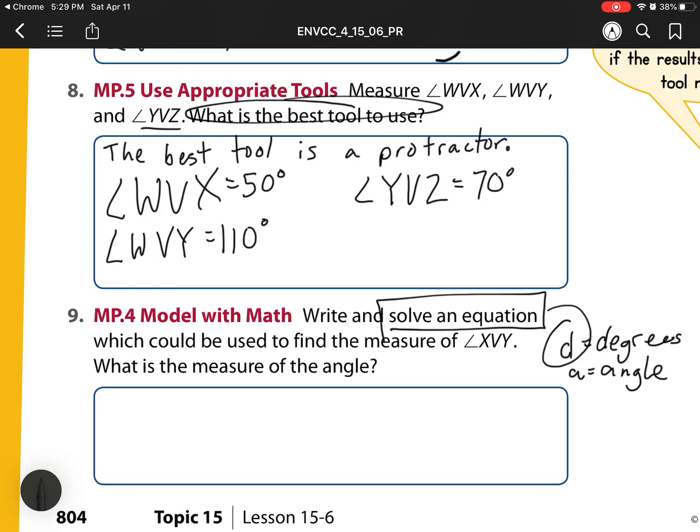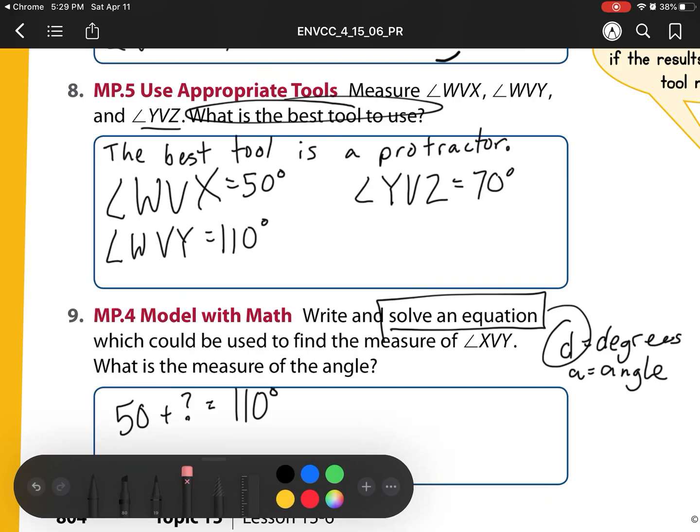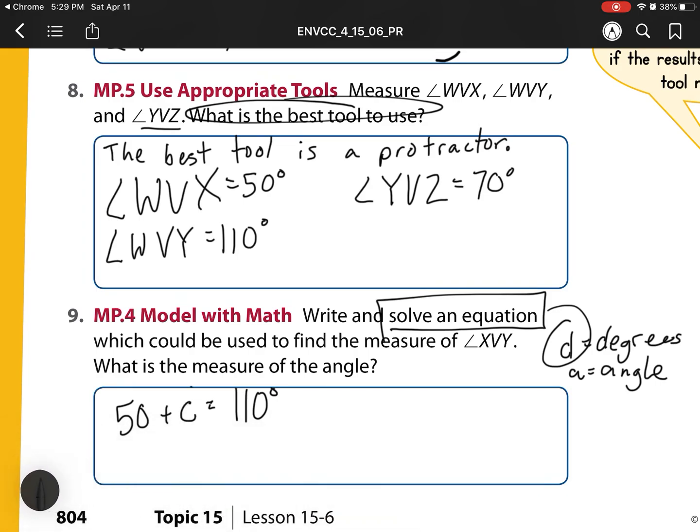So this is write and solve an equation. Well, we know that 50 degrees plus that missing one is equal to 110 degrees. But since I'm writing an equation, I don't use that question mark. I use my variable. So that question mark is the same thing as that D. So there is my equation.